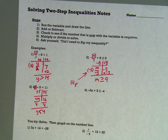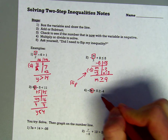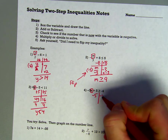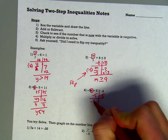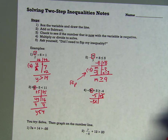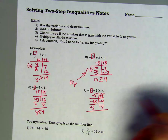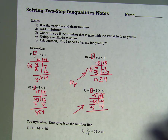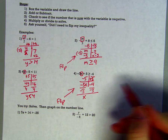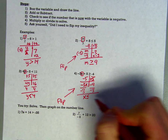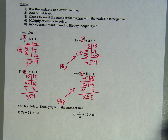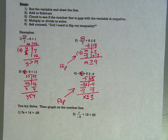Number 4: negative 3x plus 5 is greater than or equal to negative 4. Box my variable, draw my line, subtract 5 on both sides — it's plus 5, so I add the opposite — giving negative 4 plus negative 5, which is negative 9. Now divide by negative 3 on both sides, and since we're dividing by a negative, I flip the inequality. I end up with x less than or equal to 3, since negative 9 divided by negative 3 is 3.